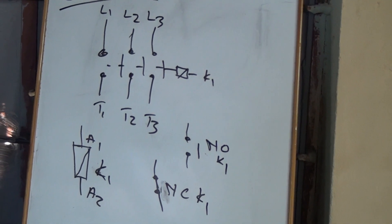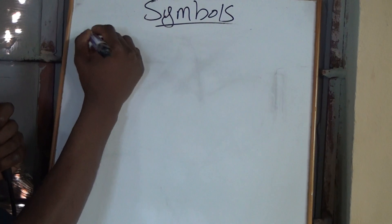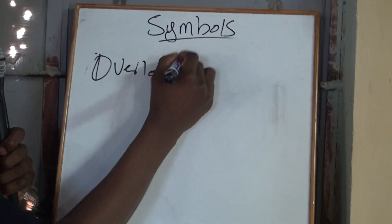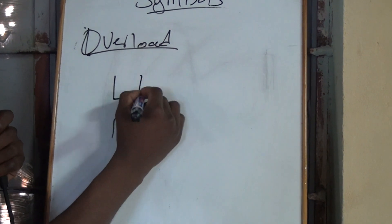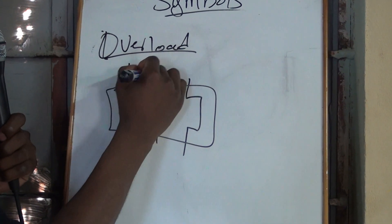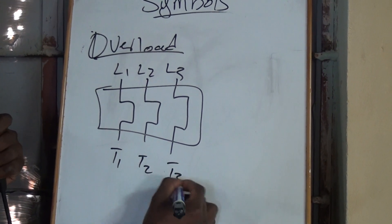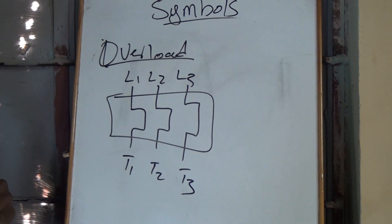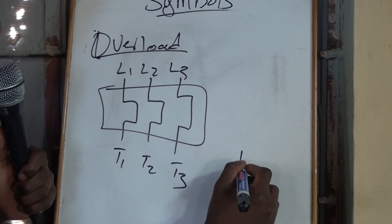So we're done with everything about the contactor. Next is the overload — this is how you draw the overload, and the contact at terminals 95 and 96, you will draw it like this.